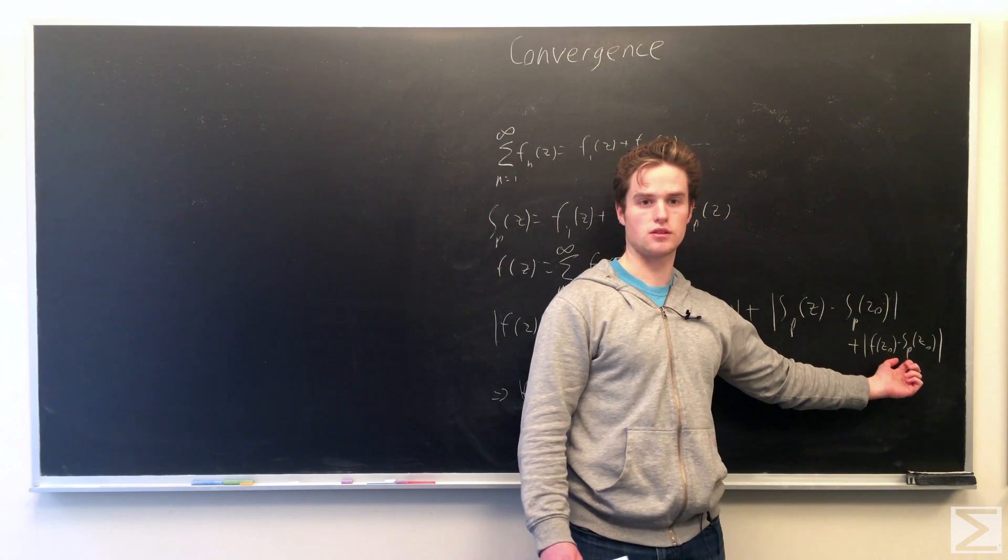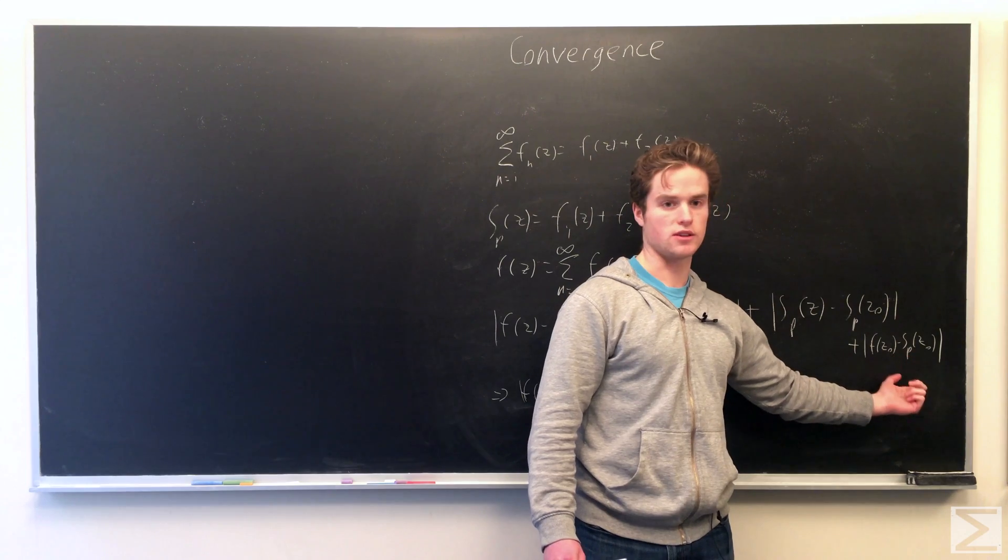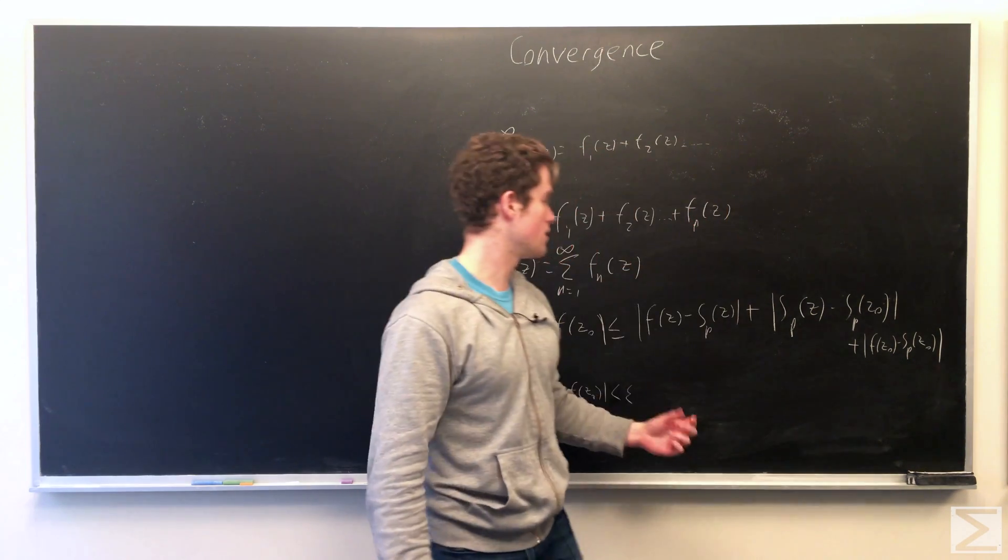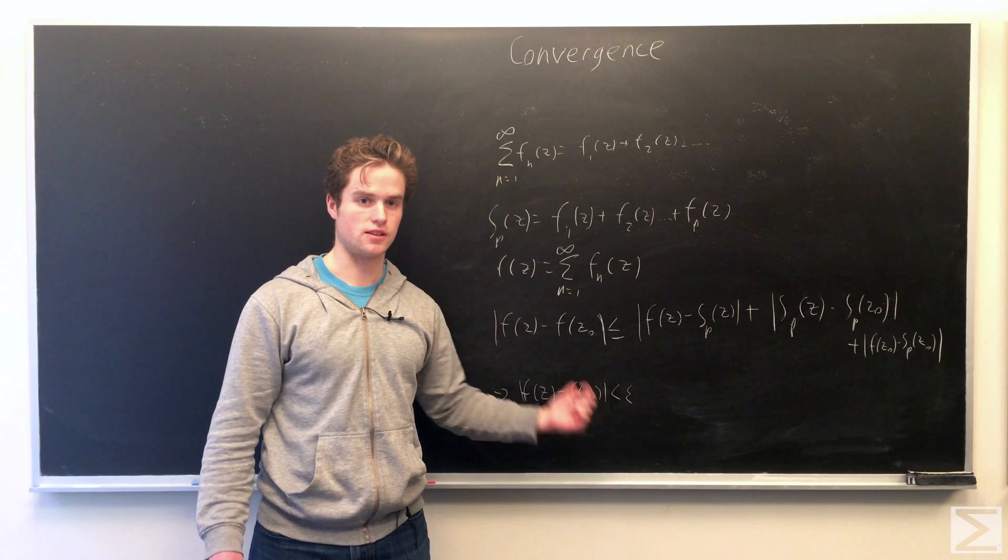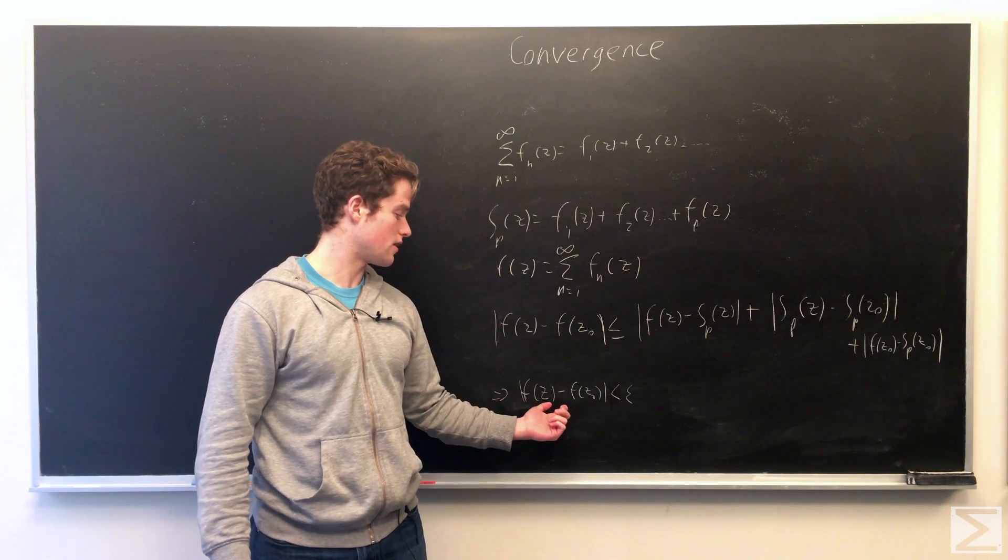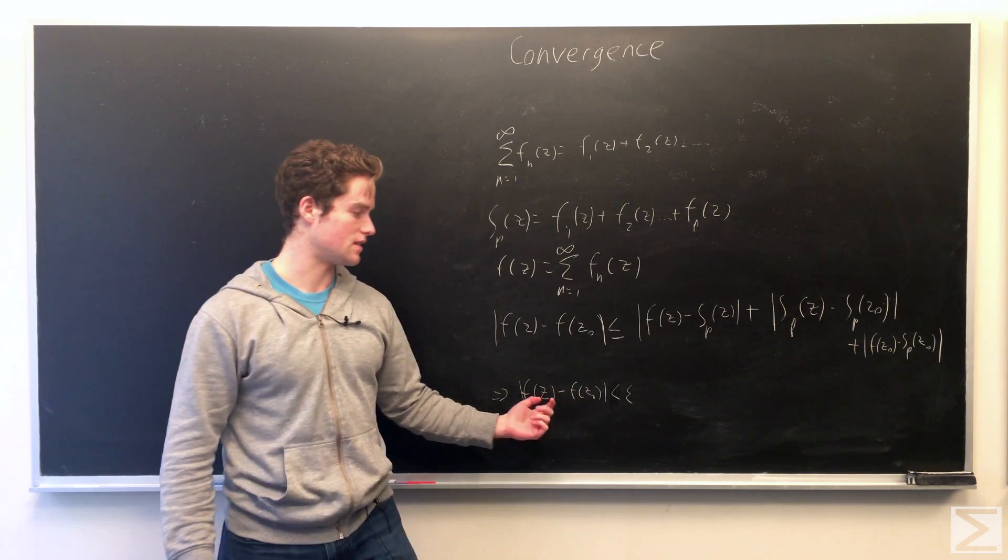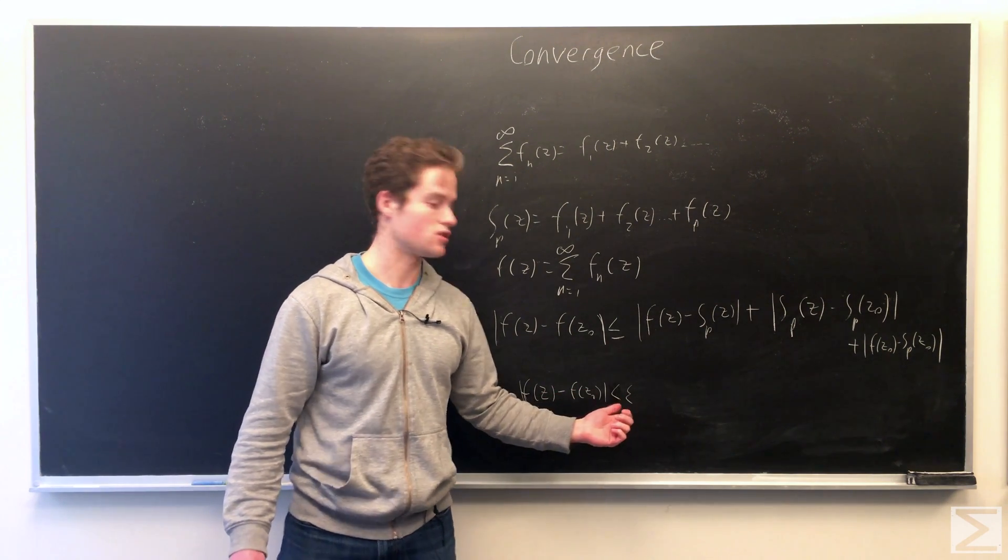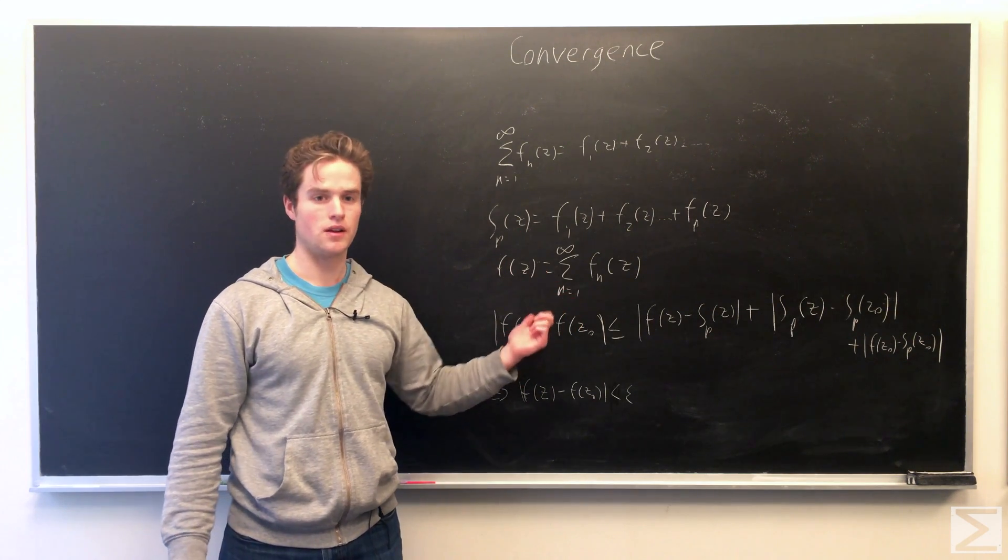And then again, for this sum over here, it's just a different point, z naught. So for P large enough, we can say this is less than epsilon over three. And so this whole thing is less than epsilon. We conclude for z minus z naught less than delta, the moduli of F of z minus F of z naught is less than some epsilon. And so we conclude that our function, our infinite sum, is in fact continuous.